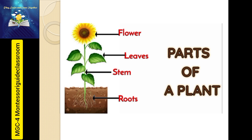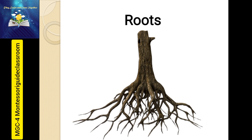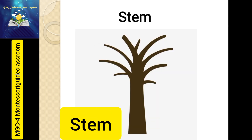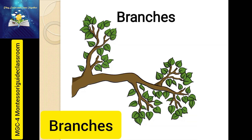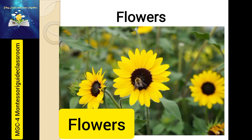Now tell me, what are these? These are parts of a plant. What is this? Roots. Stem. Branches. Leaves. Flowers.